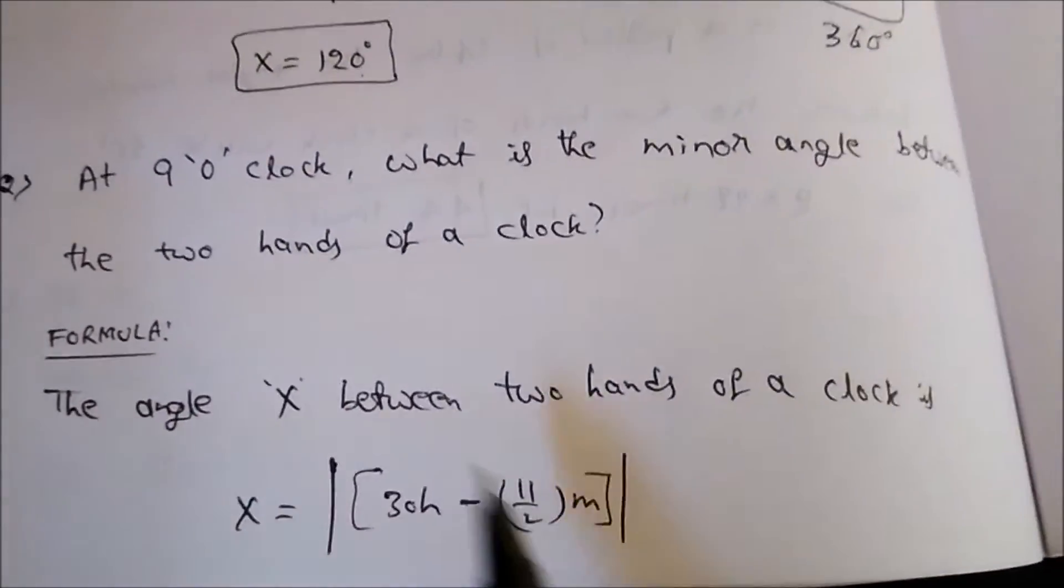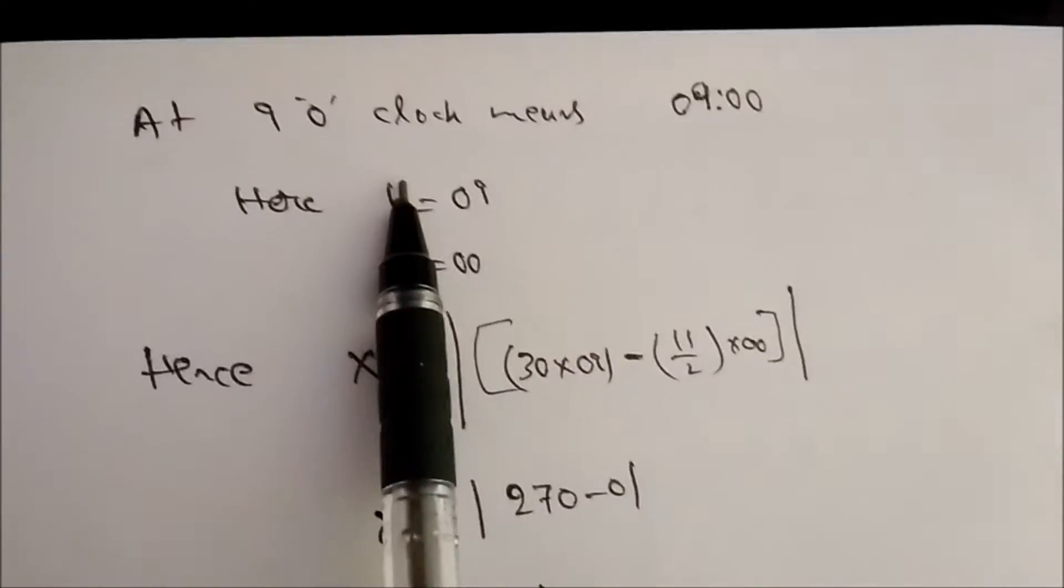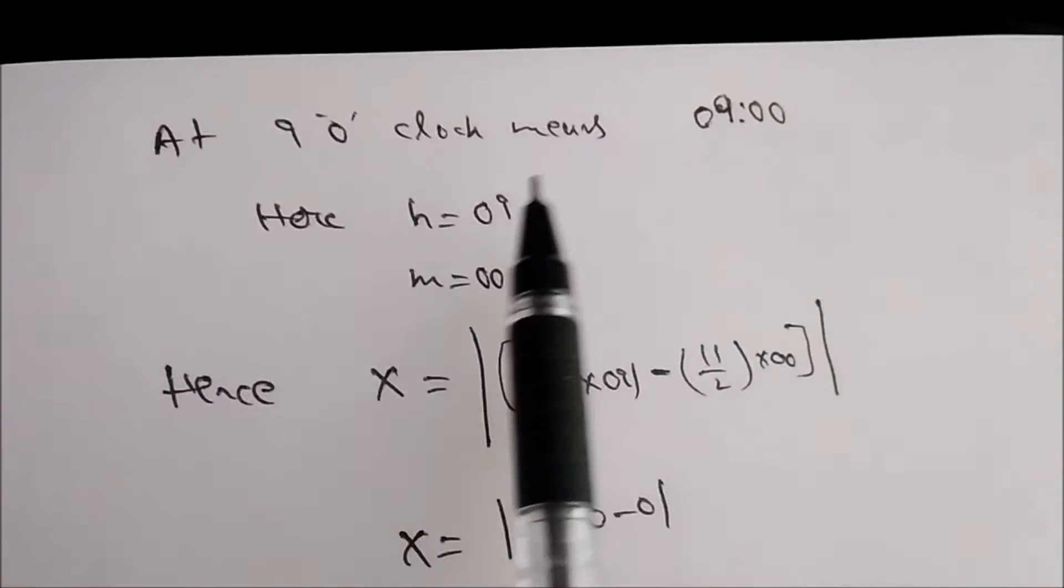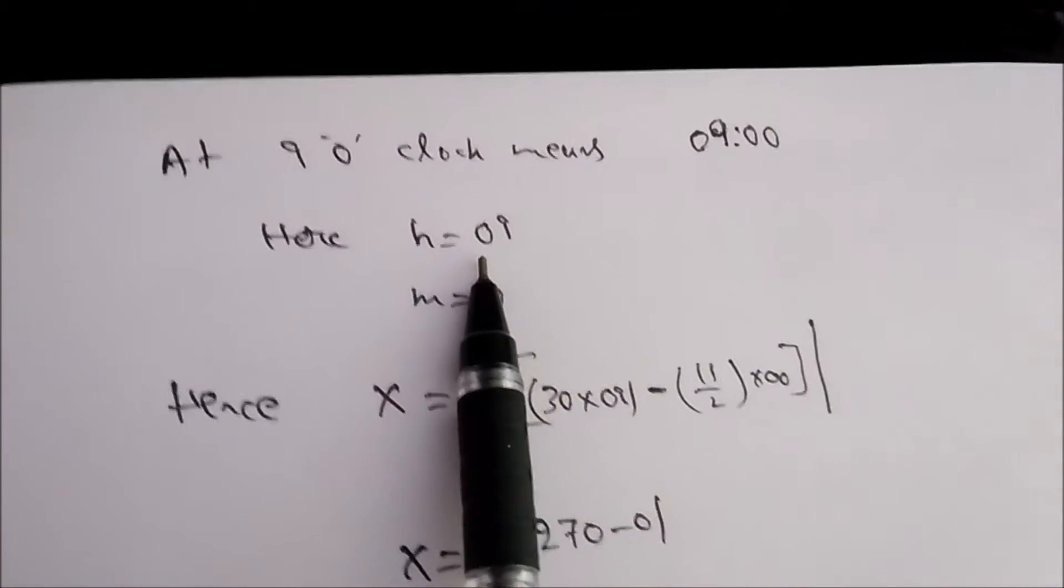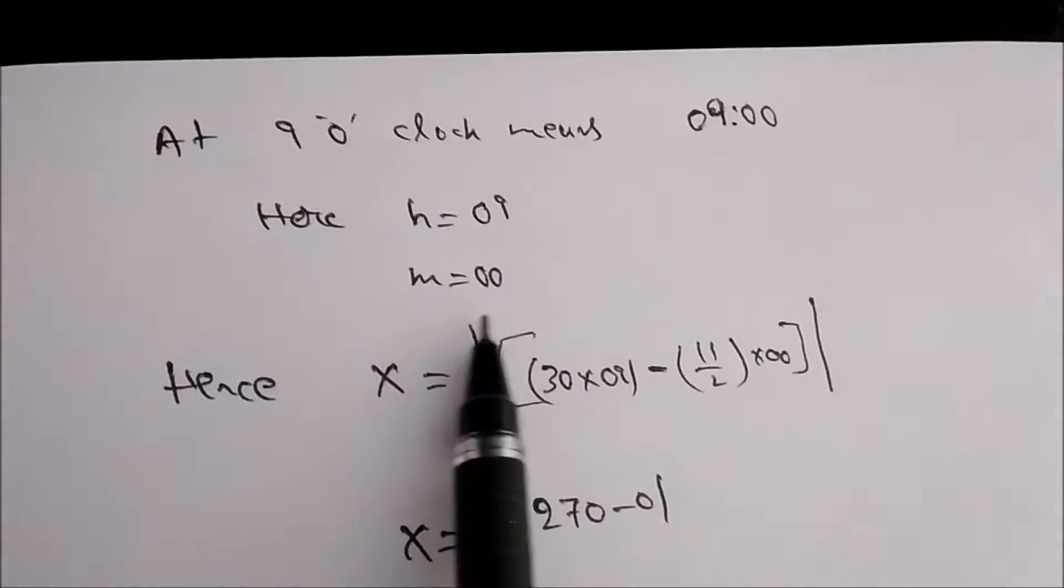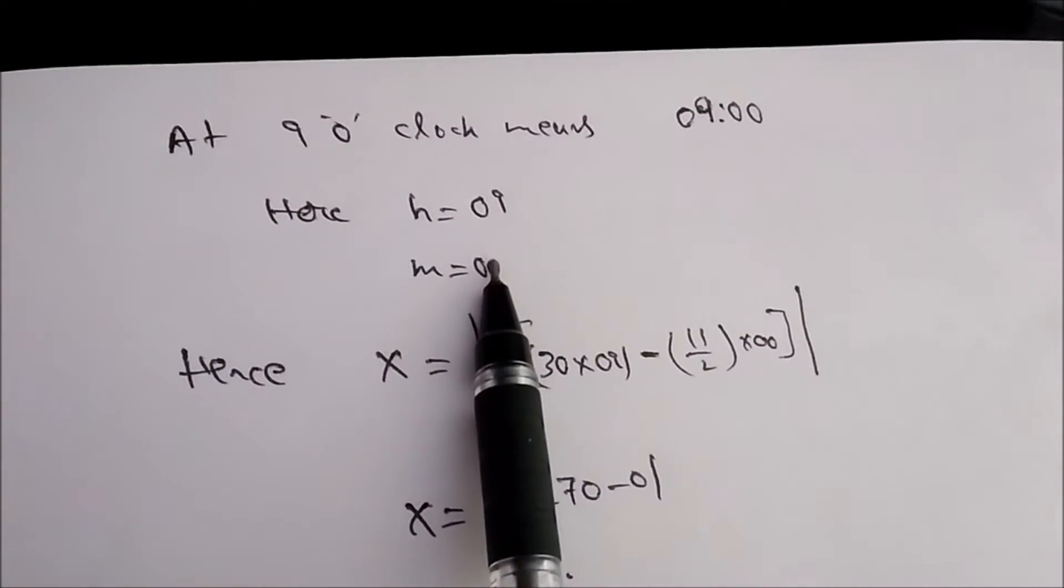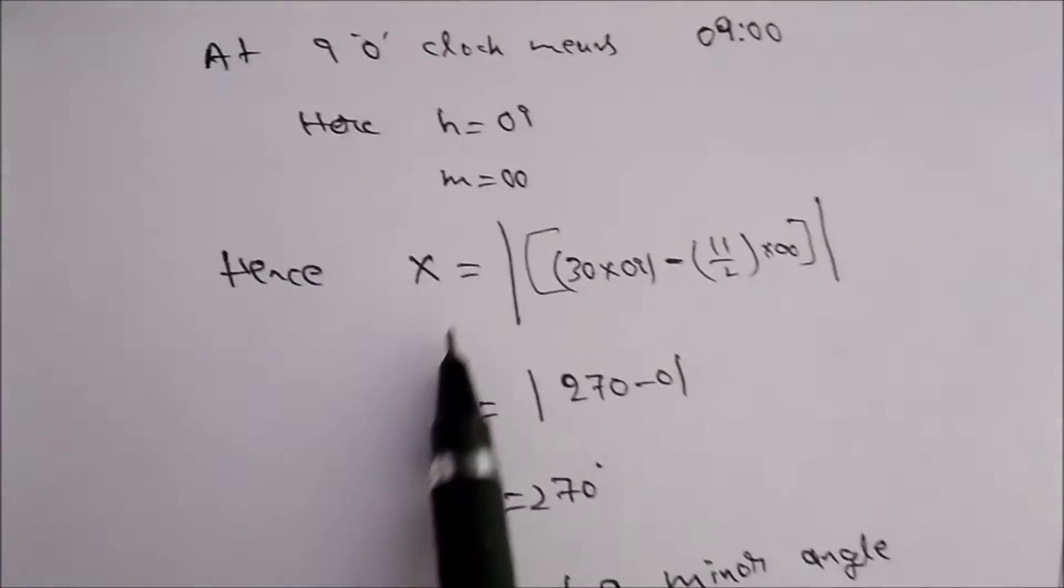Now the time given is 9 o'clock. At 9 o'clock means 9 hours, 0 minutes, so H is 9 and M is 0. Now substitute these values in the given formula: X equals 30 times H, 30 into 9, minus 11 by 2 times M, M is 0.